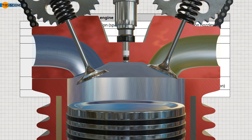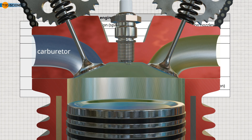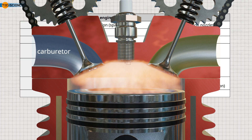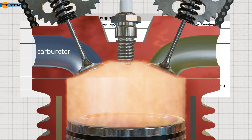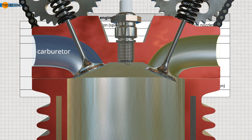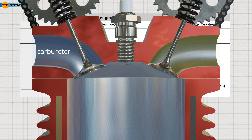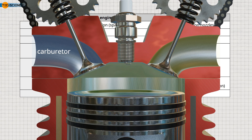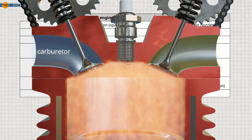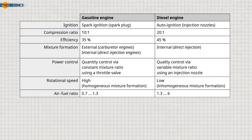In contrast, in a gasoline engine, the air-fuel mixture can be homogenized by the carburetor prior to ignition, as the combustion process is initiated later by the spark plug. A fuel-air ratio of less than 1.3 in diesel engines carries the risk of soot formation, which must be avoided at all costs.